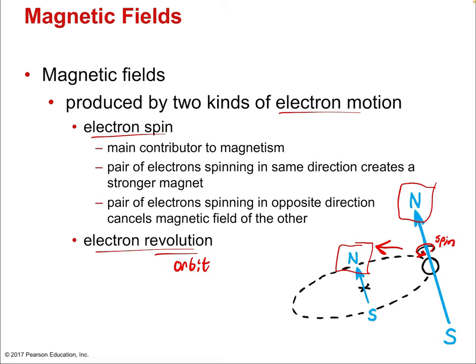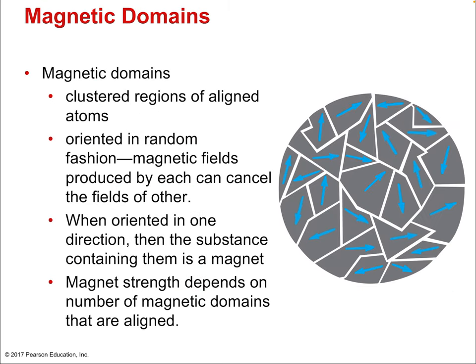The direction of the magnetic field is always such that if you curl the fingers of your right hand, your thumb points in the direction of the north pole — for both the spinning electron and the revolving electron around the nucleus. Note that it's the spin of the electron that creates the stronger magnetic field, as denoted by the larger blue magnetic field line.